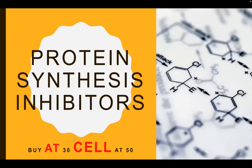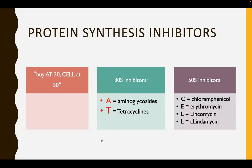This is a must-know for your exam: the famous mnemonic of the protein synthesis inhibitors — buy at 30 and sell at 50. At 30, these are the 30S subunit inhibitors, which is A for aminoglycosides and T for tetracyclines.